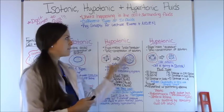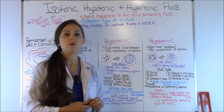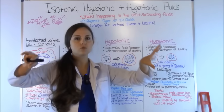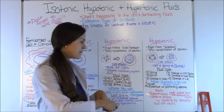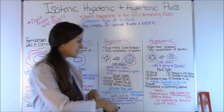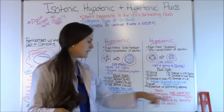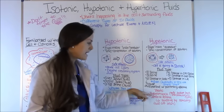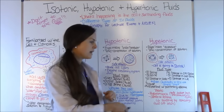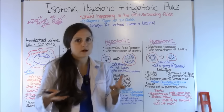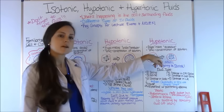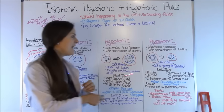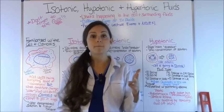Why would you give a hypertonic solution? When patient cells are very swollen, we need to pull fluid out of those cells into the body so the patient can excrete it. For patients with cerebral edema, it helps decrease swelling by removing fluid from the brain — you might give 3% saline. For patients with hyponatremia (low sodium), it pulls sodium from the cell into the blood to increase their sodium level and balance it out.